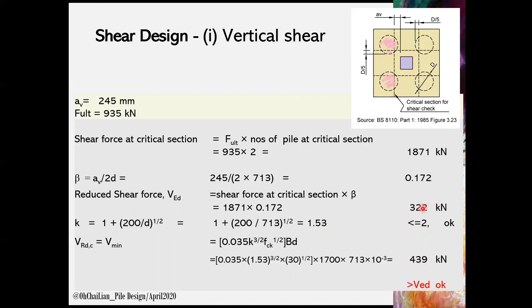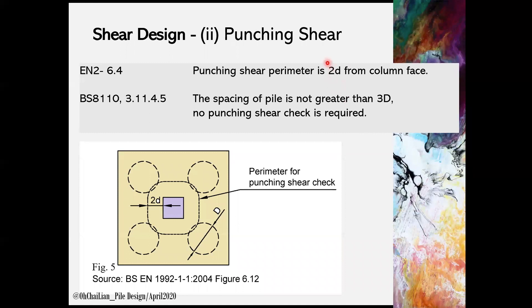Punching shear is another shear design criteria. Eurocode 2, section 6.4 recommended that the punching shear parameter is 2D from column face, as illustrated in Figure 5. There is a clear guideline from BS 8110 3.11.4.5, stated that if the spacing of pile is not greater than 3D, which in this case is 3D, no punching shear check is required.